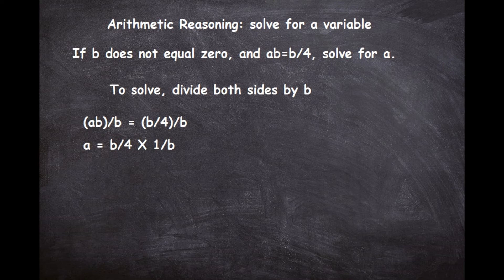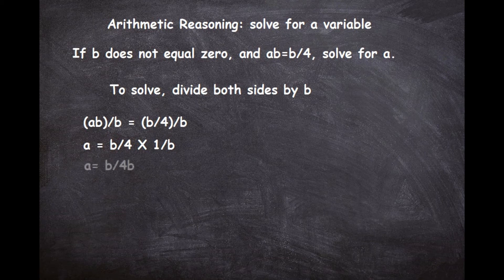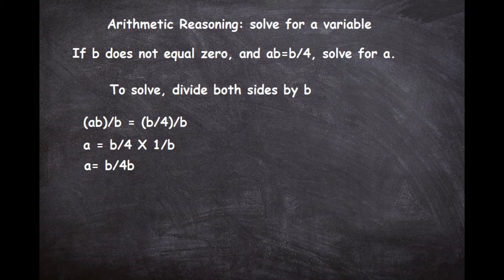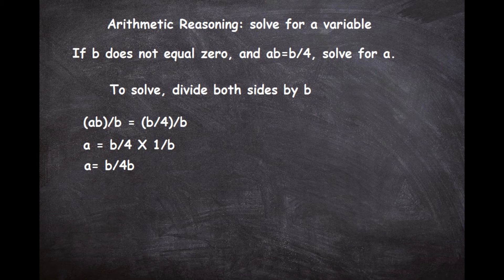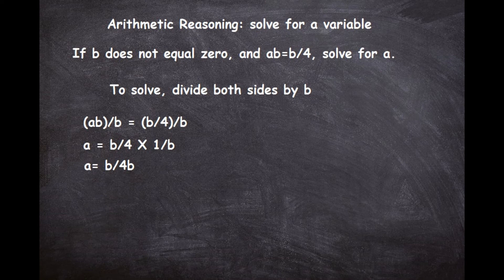When you simplify you'll get a equals b/4b, because if you multiply the numerators out, b times 1 is b, and 4 times b is 4b. So you see in that step where it says b/4 times 1/b, we're going to go b times 1 which is b, and 4 times b which is 4b. So we're multiplying across the numerators and then multiplying across the denominators.